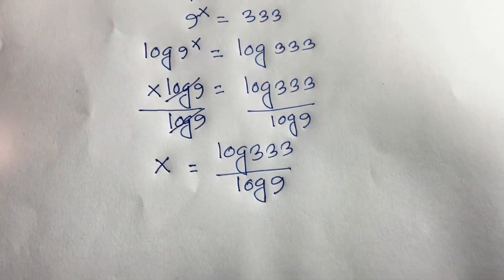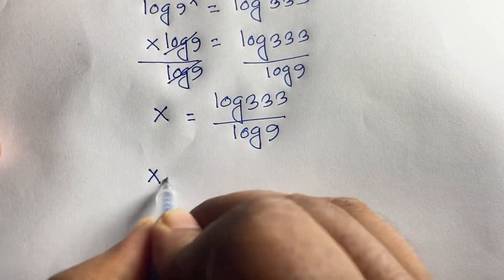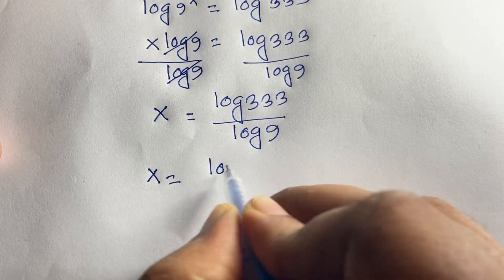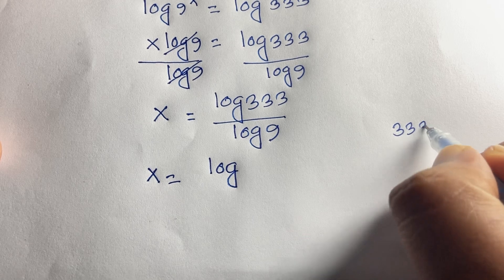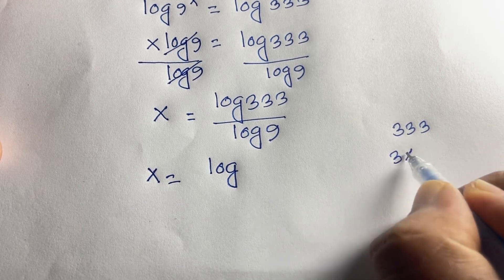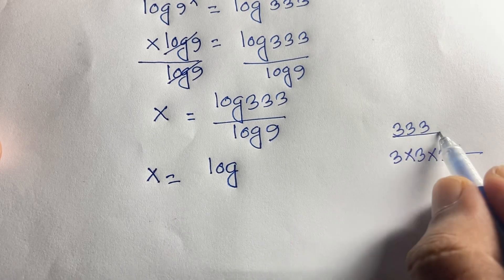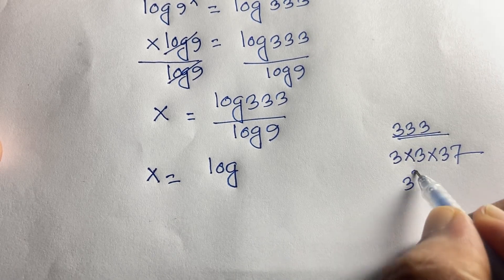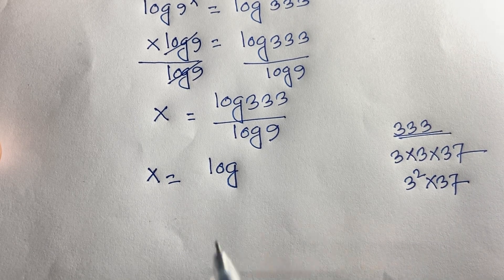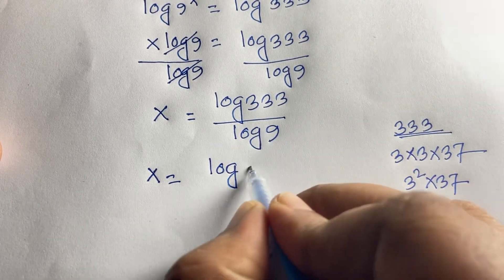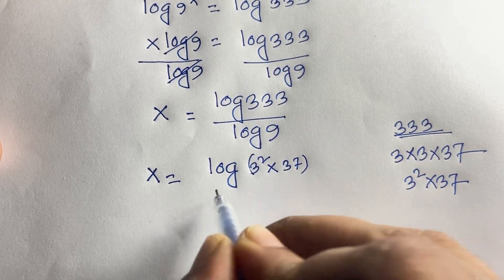Now, I can say 333 equals 3 times 3 times 37, which is 3 squared times 37. And 9 equals 3 squared. So this equation becomes x equals log of 3 squared times 37, over log of 3 squared.